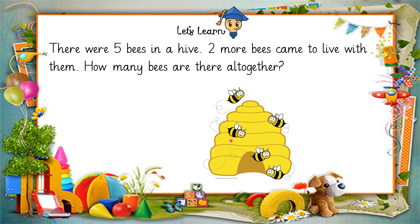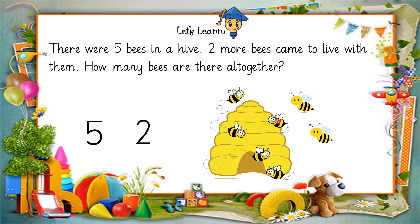Let's solve addition sums. Today there were five bees in a hive. Let's count them: one, two, three, four, five. There were five bees in a hive. Two more bees come to live with them. How many bees are there altogether? We are going to put the bees all together using the plus sign and equals-to sign.